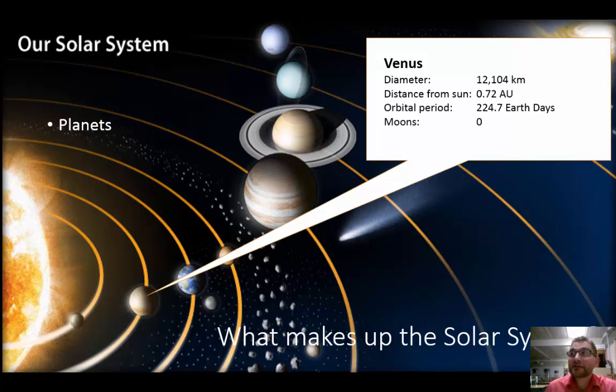Next is Venus. Venus's diameter is very similar to that of Earth. It is 0.72 astronomical units from the sun. Its orbital period takes 224.7 Earth days. And again, Venus has no moons.